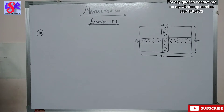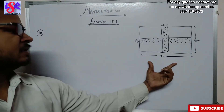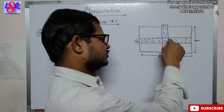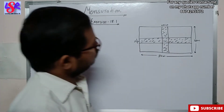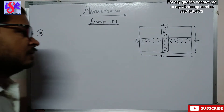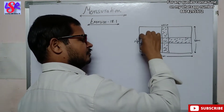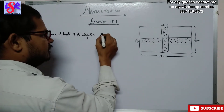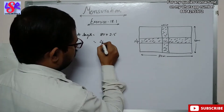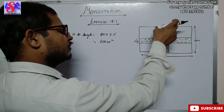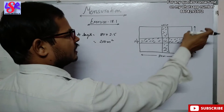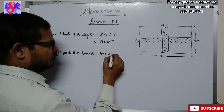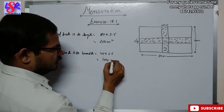Now let us move to question number 10. We have a rectangular field with length 80 meter and breadth 40 meter, and two cross paths intersecting at a common point. The width of the cross path is 2.5 meter. The area of the path parallel to length equals 80 into 2.5, that is 200 meter square. The area of the path parallel to breadth equals 40 into 2.5, that is 100 meter square.